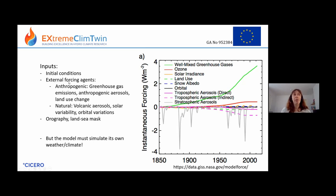We give climate models what we call external forcing agents. These can be human or natural: things like greenhouse gases, anthropogenic aerosols, and land use changes are anthropogenic external forcing agents. Natural ones can be volcanic aerosols, solar variability, and orbital variations. We also tell the models where the mountains are, where it's land and where it's ocean, and then the model simulates its own weather and climate from those boundary conditions.